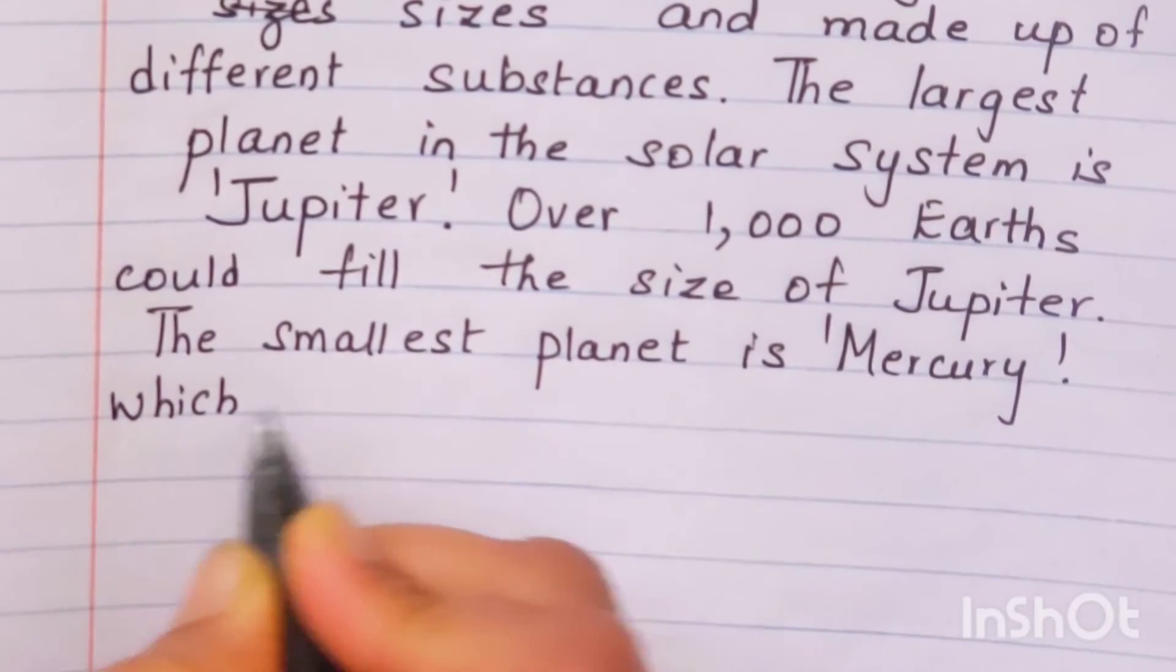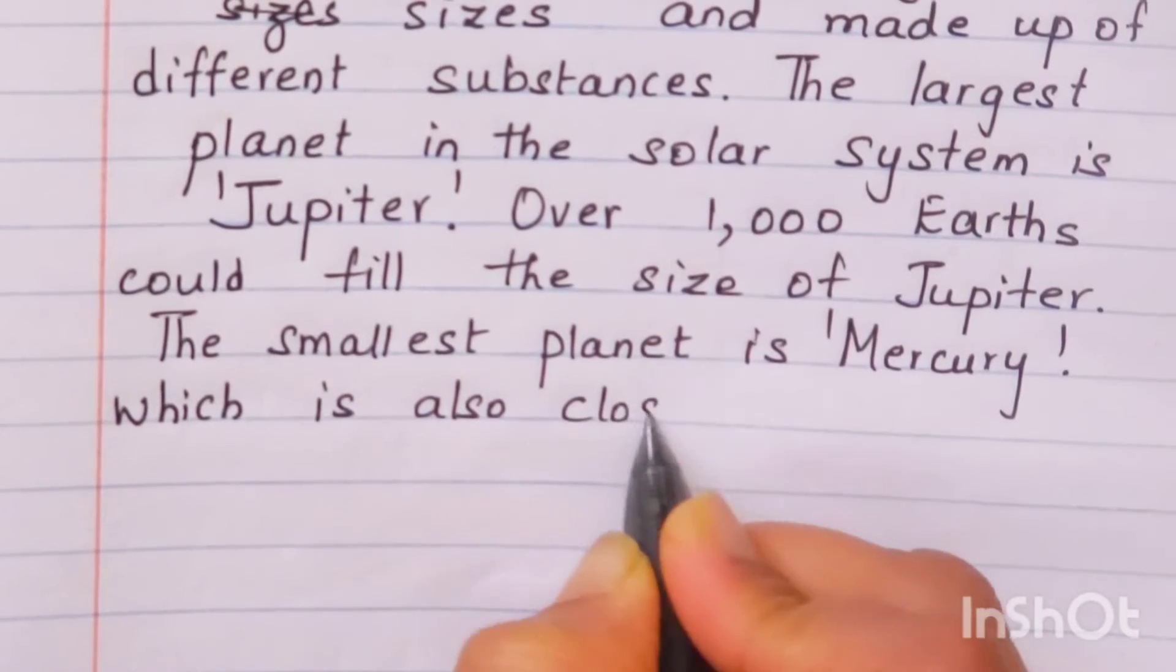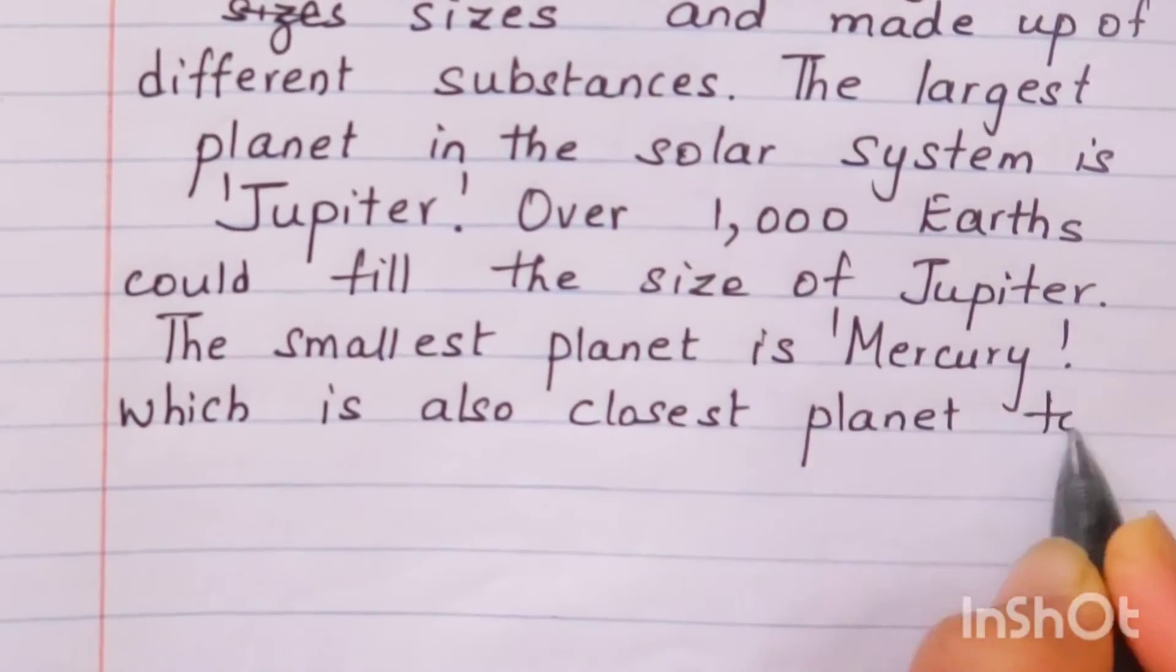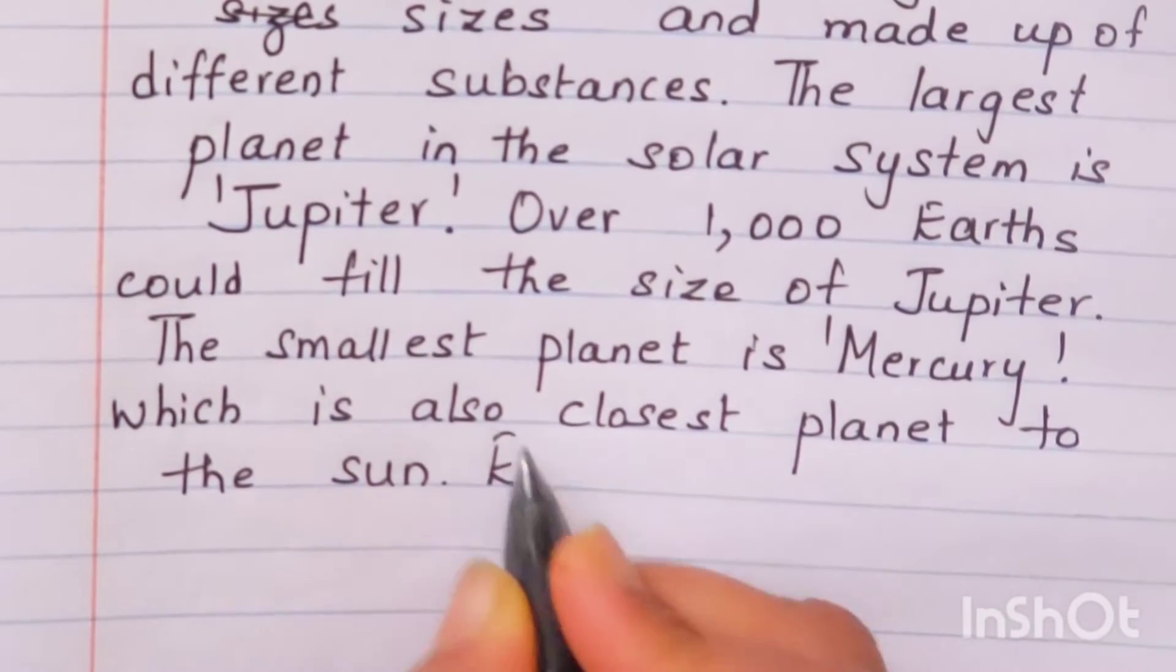The smallest planet in the solar system is Mercury which is the first planet and is also closest planet to the sun.